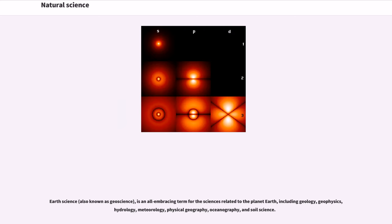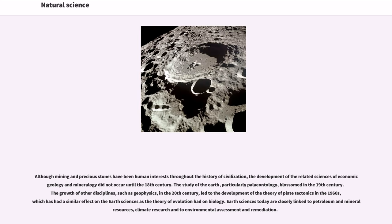Earth science is an all-embracing term for the sciences related to the planet earth, including geology, geophysics, hydrology, meteorology, physical geography, oceanography, and soil science. Although mining and precious stones have been human interests throughout the history of civilization, the development of the related sciences of economic geology and mineralogy did not occur until the 18th century. The study of the earth, particularly paleontology, blossomed in the 19th century. The growth of other disciplines, such as geophysics, in the 20th century, led to the development of the theory of plate tectonics in the 1960s. Earth sciences today are closely linked to petroleum and mineral resources, climate research and to environmental assessment and remediation.